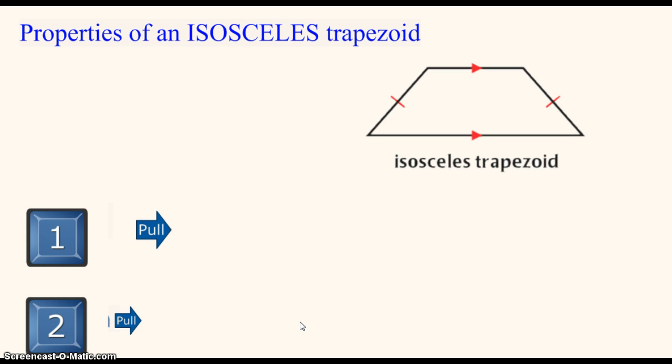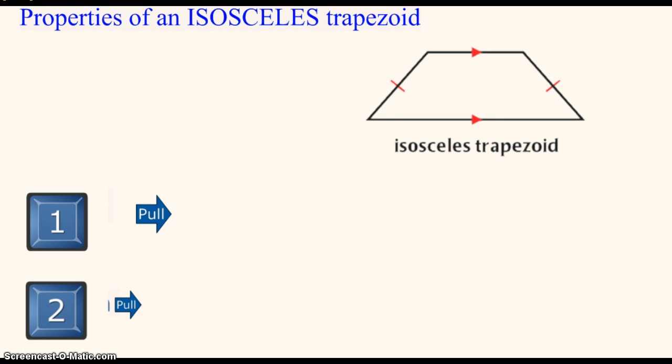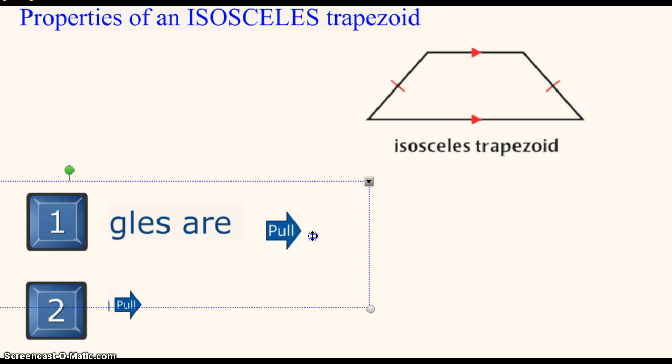The next shape we have is an isosceles trapezoid. An isosceles trapezoid is a trapezoid, it is just special for a certain reason. The reason it is special is because the legs are congruent. And if the legs are congruent, just like an isosceles triangle, then this is an isosceles trapezoid. If you come to an isosceles trapezoid, then there's three special things.